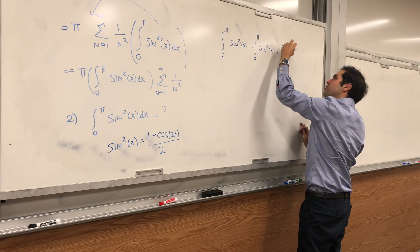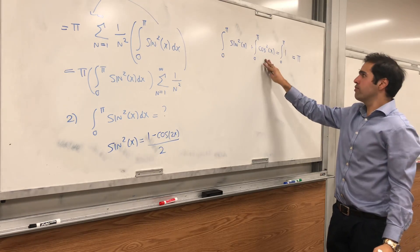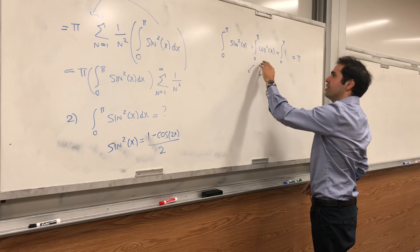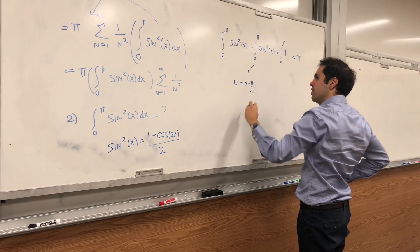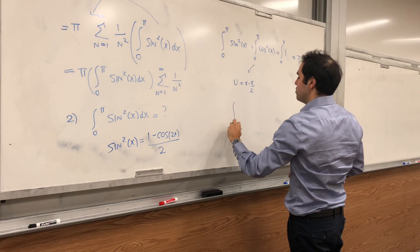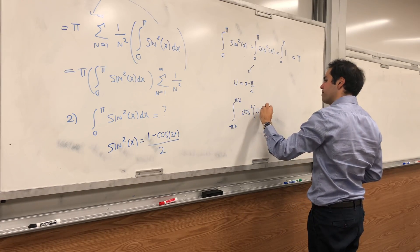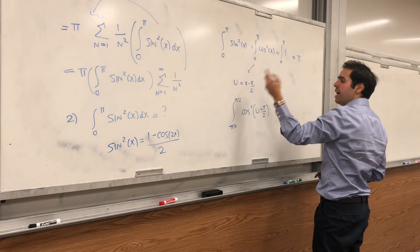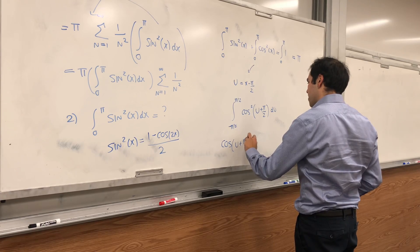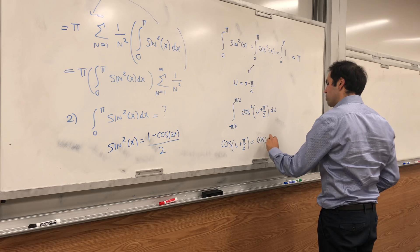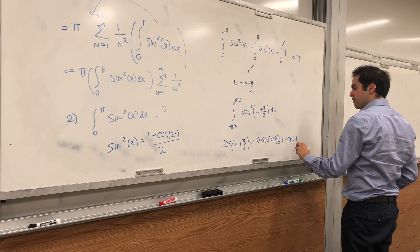Then integrate from 0 to pi, 0 to pi and 0 to pi. Well, this integral is just pi. Now, this is what we want, and this is weird. But for this one, let's use a u-sub. Let u be x minus pi over 2. Then the integral becomes minus pi over 2 to pi over 2, and then cosine squared of u plus pi over 2.